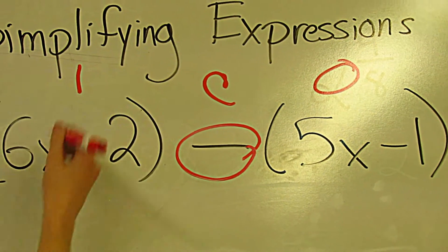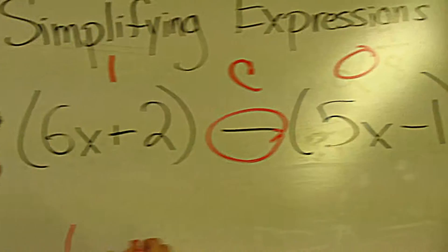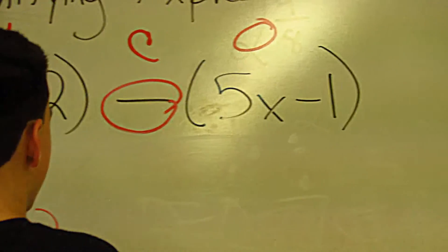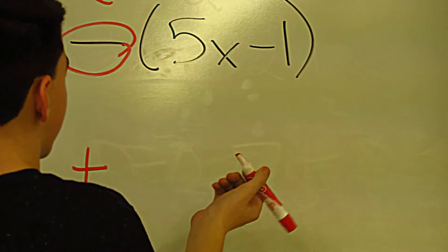This stays the same because it's leave, so it's going to be 6x plus 2. You don't need the parentheses.